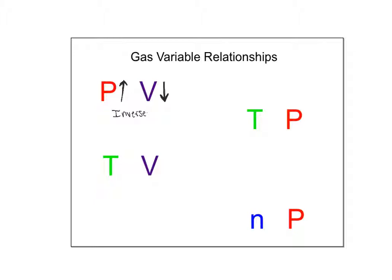Temperature and volume have a direct relationship. Think of kids in a bounce house moving in slow motion — it stays the same shape. Speed them up and they push the sides, making the bounce house expand. So in a flexible container like a balloon, increasing temperature increases volume.